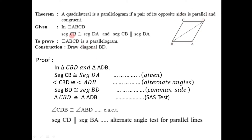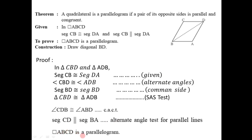In the first part it is given that CB is parallel to DA, which is the first pair of opposite sides. And we have proved here that CD is also parallel to BA, which is the second pair of opposite sides of this quadrilateral. So for quadrilateral ABCD both pairs of opposite sides are parallel. By the definition of a parallelogram we can conclude that quadrilateral ABCD is a parallelogram.